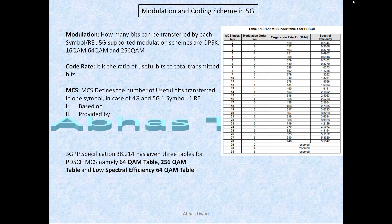To summarize modulation and coding scheme: the modulation schemes supported, what coding rate and MCS are, how many MCS indexes exist, how MCS is calculated, who provides it, and the three tables — 64QAM, 256QAM, and low spectral efficiency 64QAM. Remember, the low spectral efficiency table is used for ultra-low latency URLLC; it's similar but the calculation is slightly different.